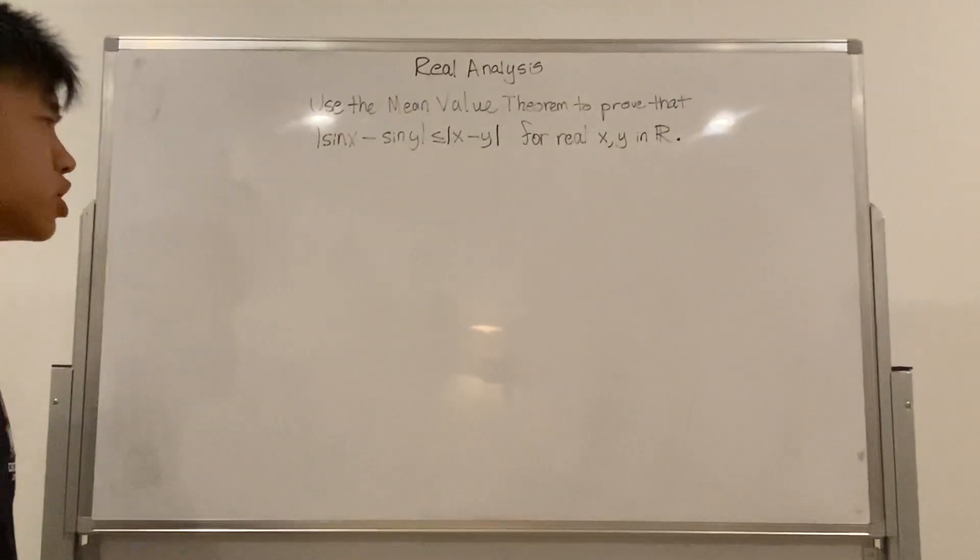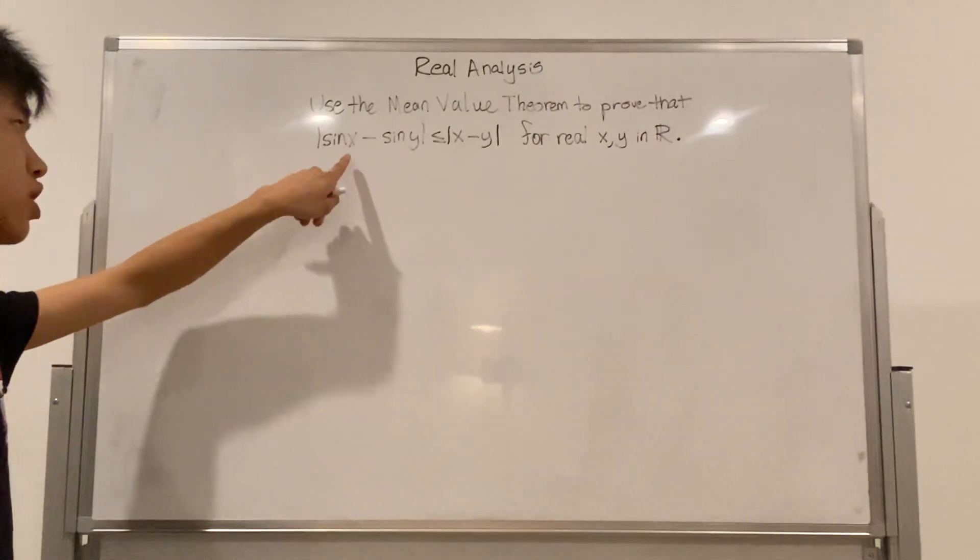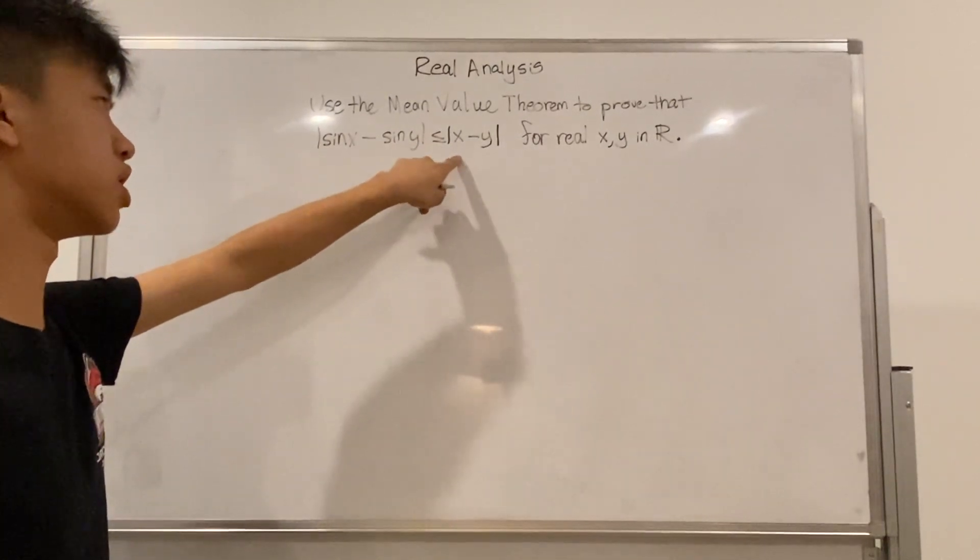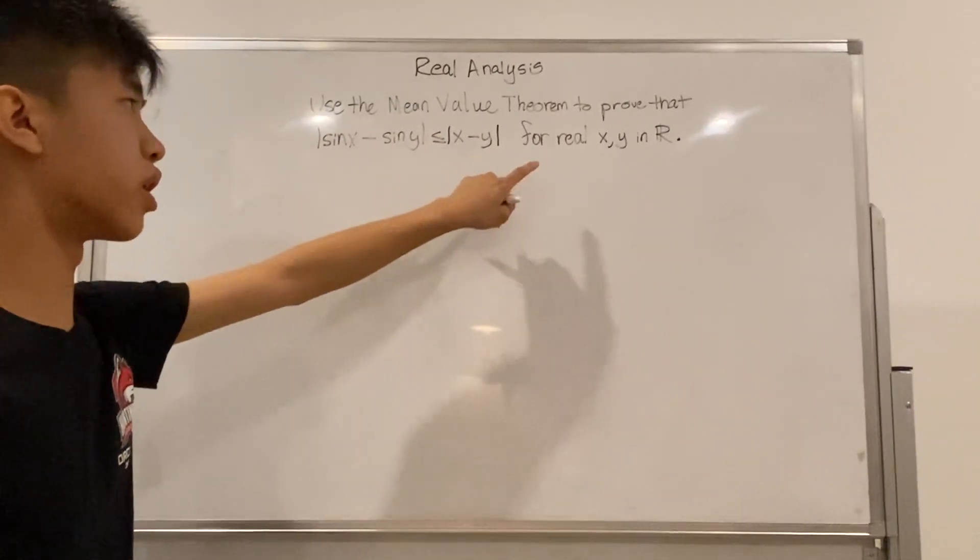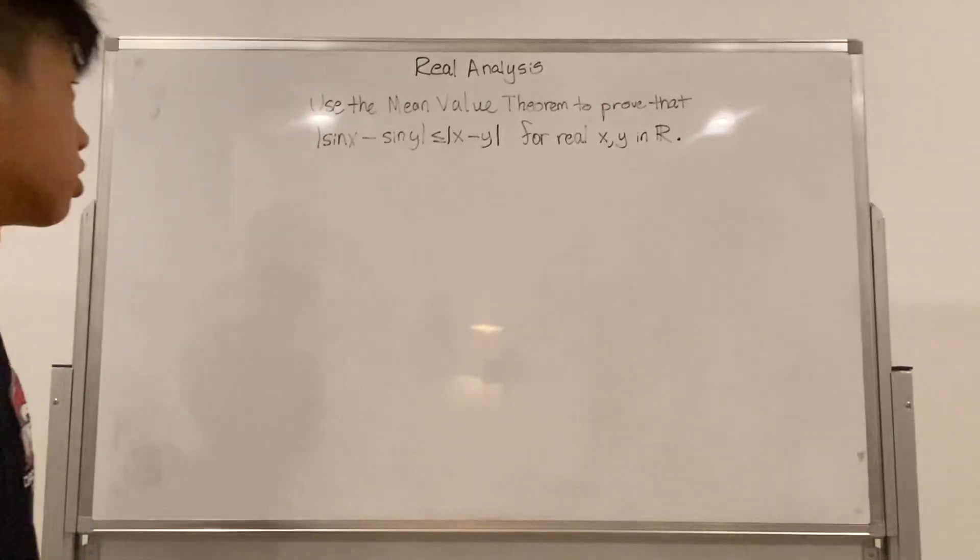Hello, YouTube. Today we will be studying a problem from real analysis. We will be using the mean value theorem to prove that the distance between sine of x and sine of y is always equal to or less than the distance between x and y, where x and y are real numbers, any real numbers.